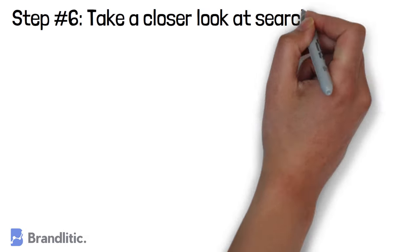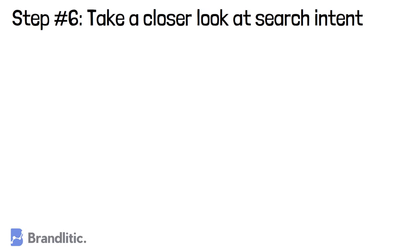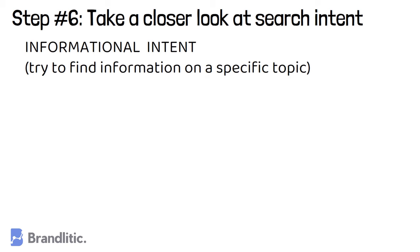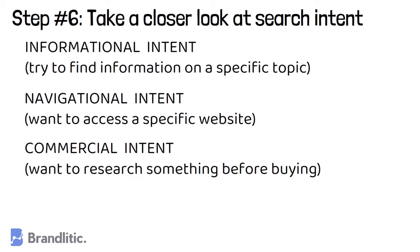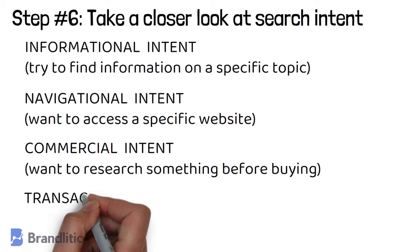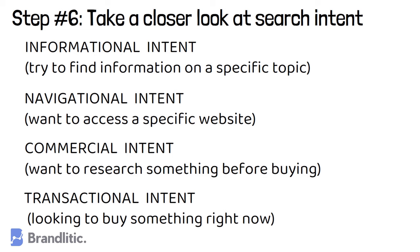Step 6: Take a closer look at search intent. Try to find out which intent your audience has when they type a certain keyphrase in Google. Ask yourself: do they have an informational intent — trying to find information on a specific topic? Or navigational intent — wanting to access a specific website? Or commercial intent — researching something before buying? Or transactional intent — looking to buy something right now? Having clarity over search intent will help you come up with a better SEO strategy. If you want to learn more about search intent, I recommend watching my video on search intent in SEO — link is in the description below.